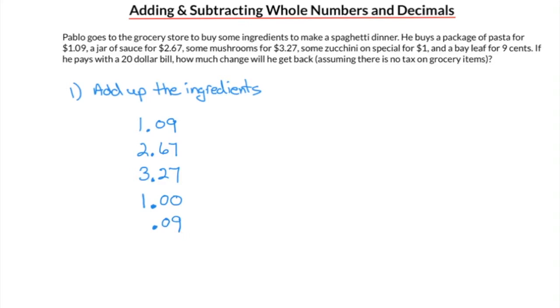We can also put a zero in front of the decimal so that the ones column has a digit in it, like the rest of the numbers. Now we can simply add up all the columns, starting at the far right, which is the hundredths column.